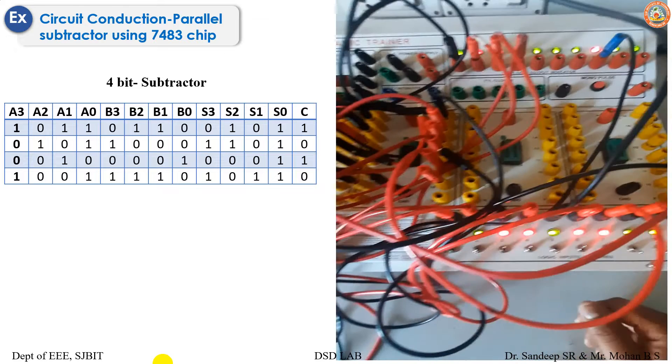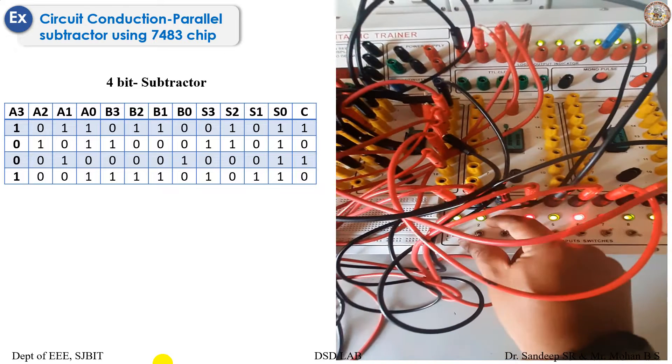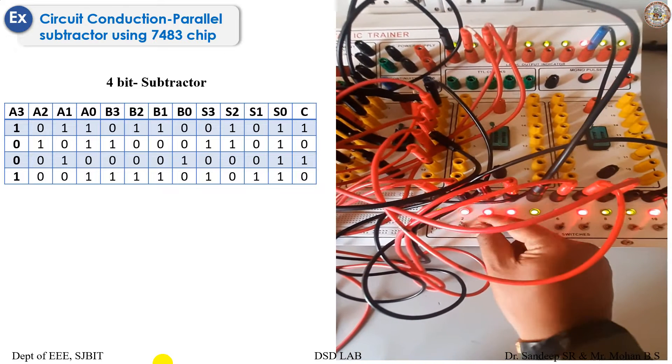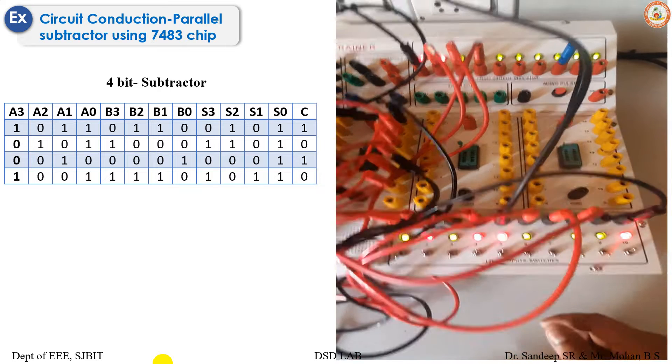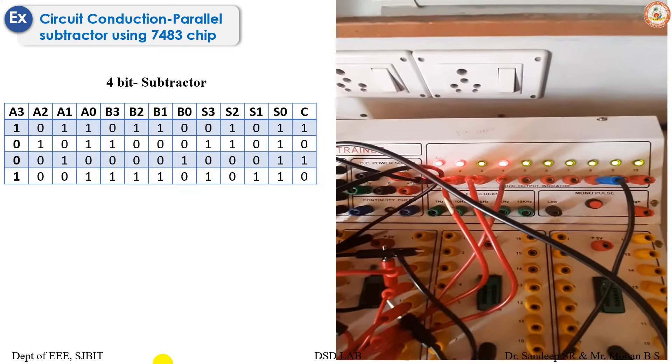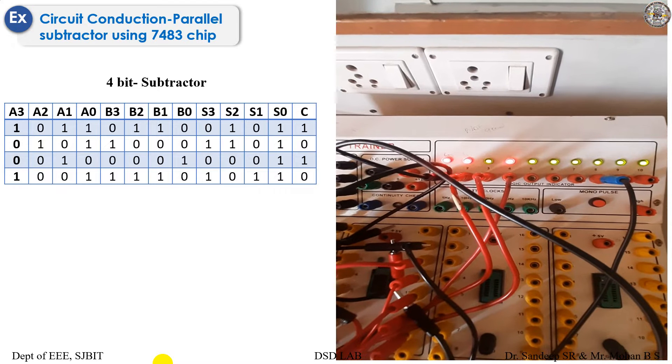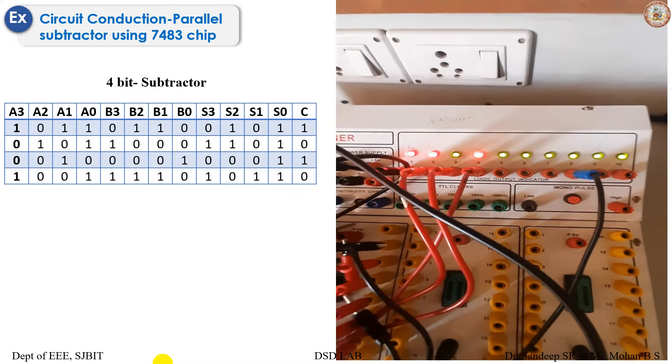Let's see the second row. That is 0, 1, 0, 1, 1, 0, 0, and the respected output is 1, 1, 0, 1, carry being 0.